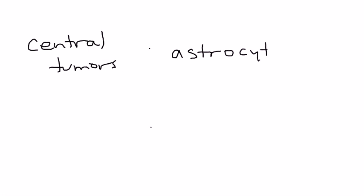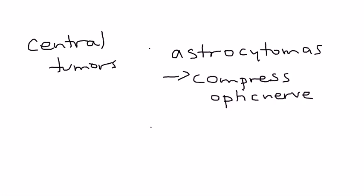For central tumors, there are two types to discuss. The first is astrocytomas, which can compress the optic nerve and lead to blindness. This is commonly seen in neurofibromatosis type 1.